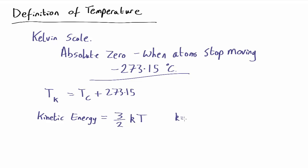So, k is the Boltzmann constant, and has a value of 1.38 by 10 to the minus 23 joules per Kelvin.